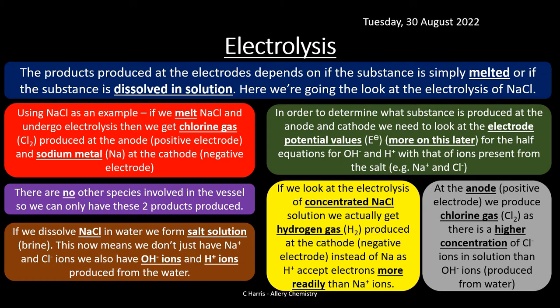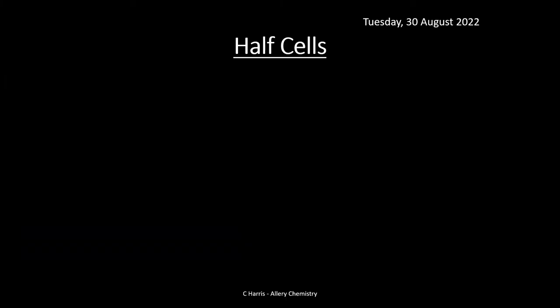This experiment should be done in a fume cupboard or well-ventilated area, as chlorine is toxic. Hydrogen is flammable so avoid sparks. The key point is: when a substance is dissolved in solution, the extra H⁺ and OH⁻ ions from water must be taken into account. When molten, the situation is more straightforward.